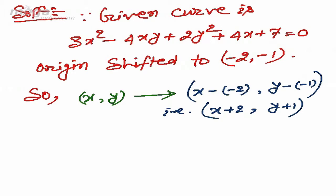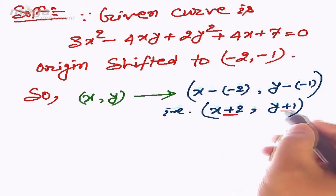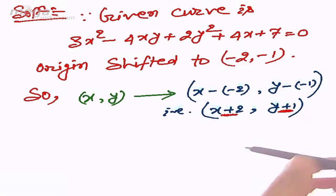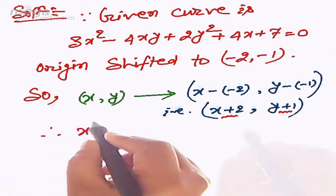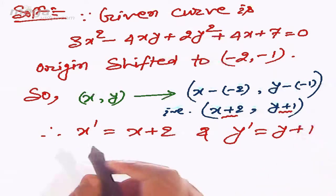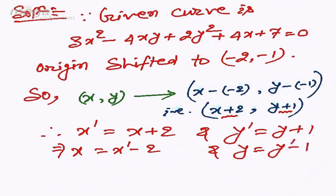To get the equation of the given curve in the new situation, we write it in the form of x' and y'. Here x' = x + 2 and y' = y + 1, so from this x = x' - 2 and y = y' - 1. Because in the new situation the coordinates are x' and y', we have to write the whole equation in terms of x' and y'.